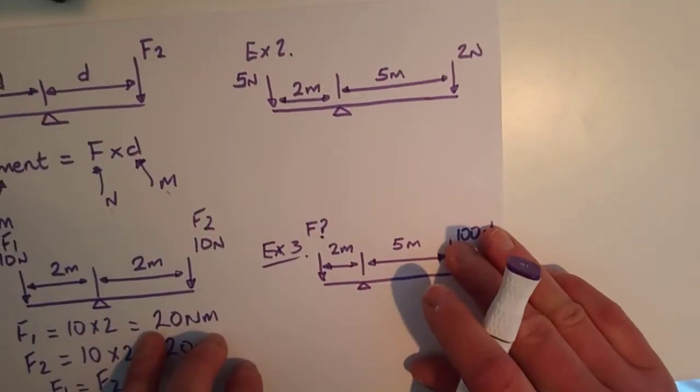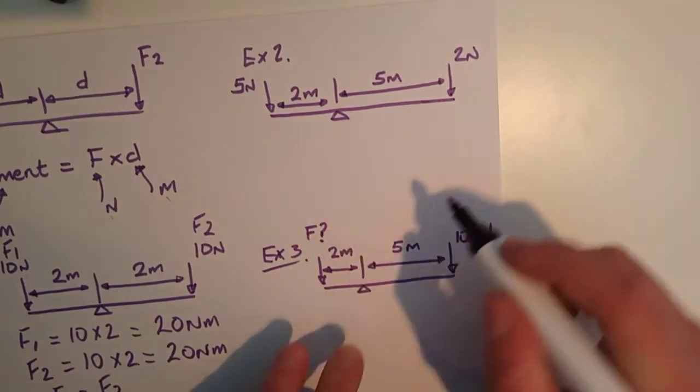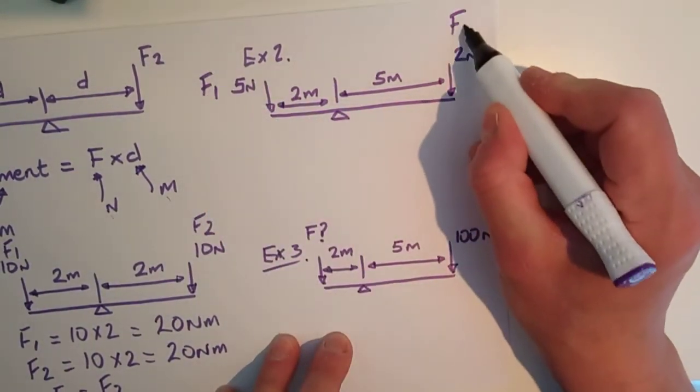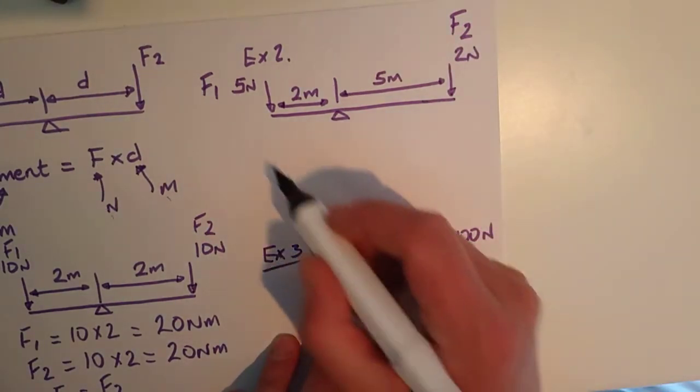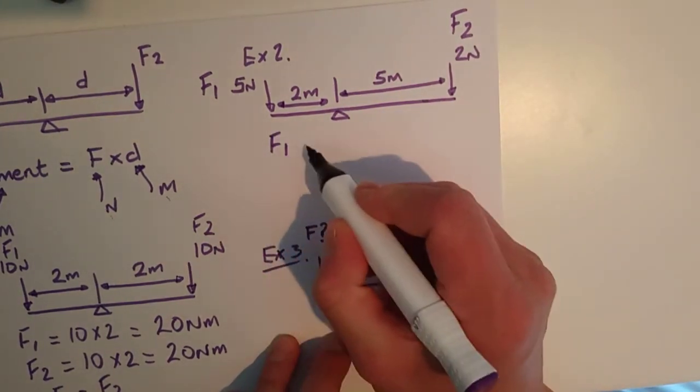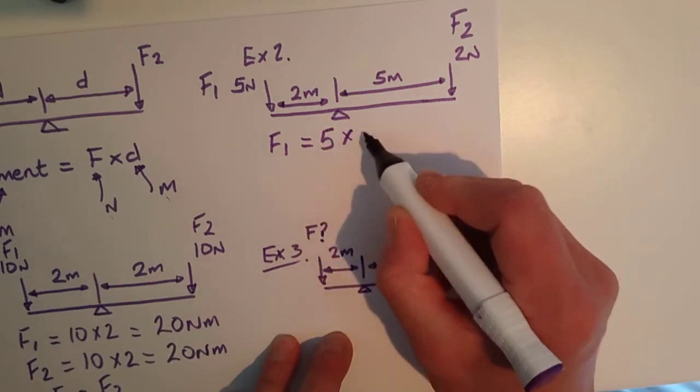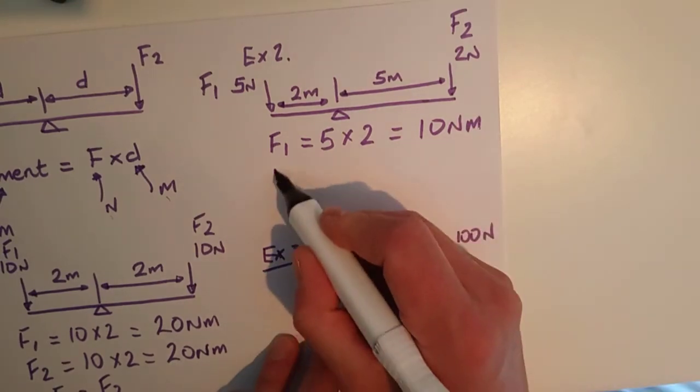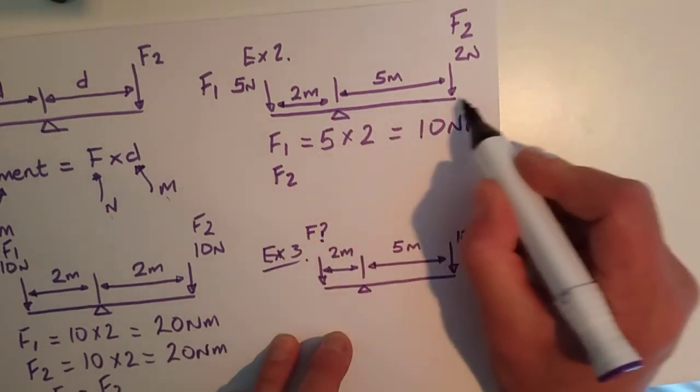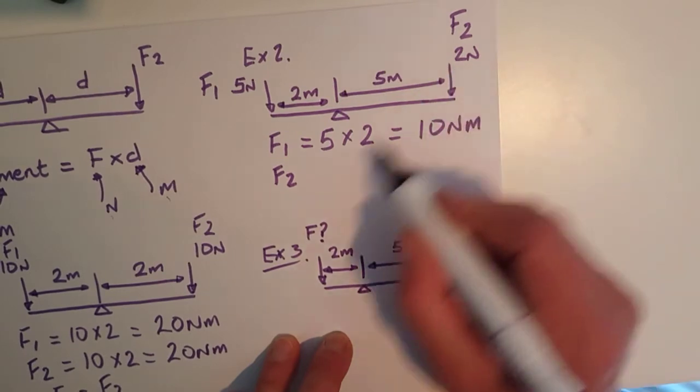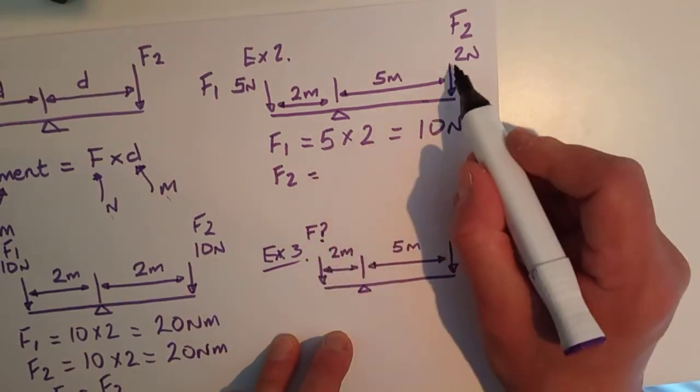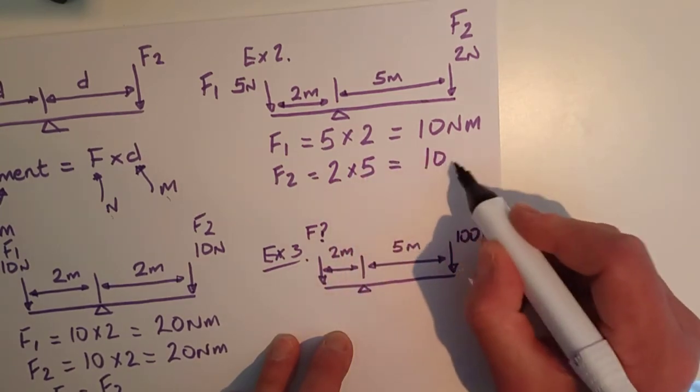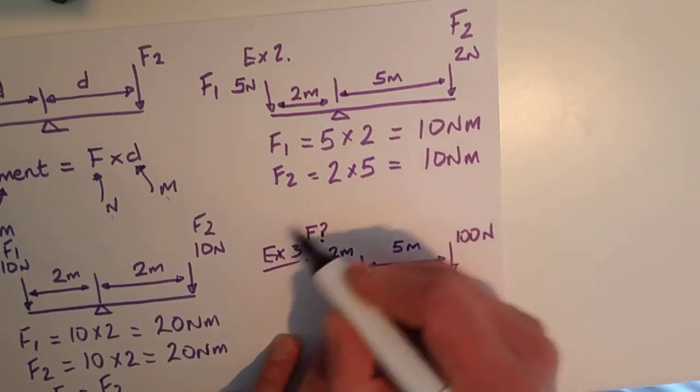Example two, again, quite simple here. You're looking at this, you might get something like this, force one and force two. Now is this balanced? Well, let's work it out here. Force one is equal to 5 times 2. So that is equal to 10 newton meters. And force two, even though it's got a longer distance here, it's got a slightly smaller force is equal to 2 times 5, which is 10 newton meters. So again, this is balanced.